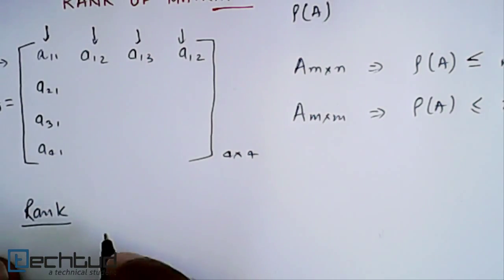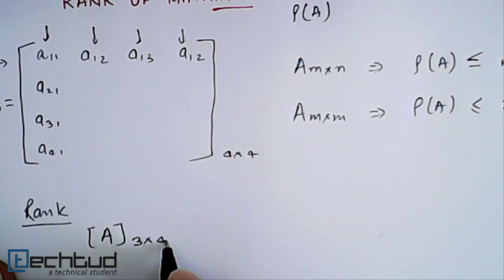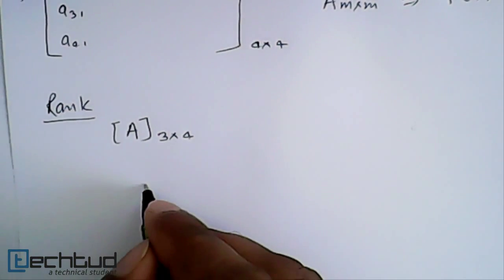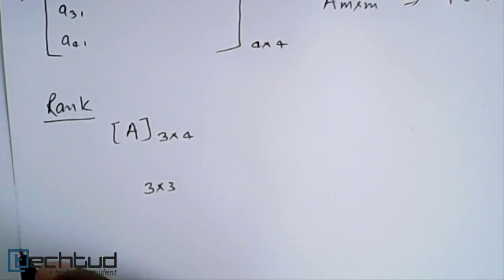For example, let's say we have a matrix of size 3 by 4. Then, in this case, we will start with forming the minor of 3 by 3 in the matrix.